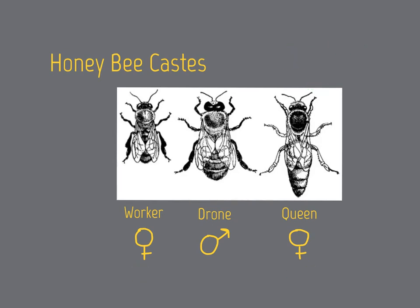Workers and queens may have the same genome, yet they have wildly different behaviors, morphologies, reproductive capacities, and lifespans. How is this possible? The answer is, of course, epigenetics.